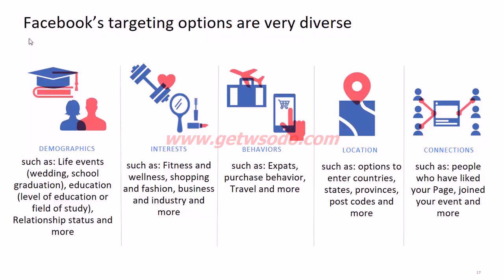Facebook targeting options are very accurate and very diverse. Demographic targeting includes life events like weddings, school graduation, education, relationship status, and more. Interest targeting covers topics like fitness and wellness, shopping and fashion, etc. Behavior targeting covers expats, purchase behaviors, and travel behaviors. Location targeting allows you to target by country, state, city, province, and even postal code — you can target specific areas within a city.